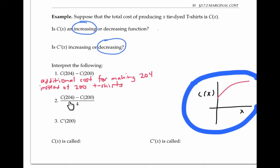The ratio [C(204) - C(200)]/4 is the average rate of change of C(x). The units are units of cost, which is probably dollars per t-shirt. Informally, you might think of this as the additional cost per t-shirt of making the last four t-shirts.